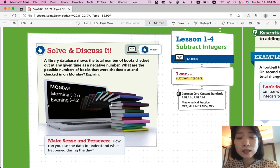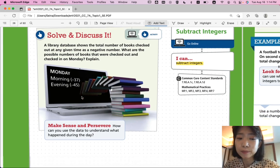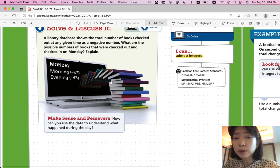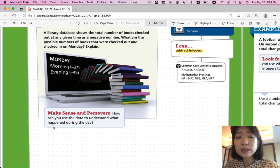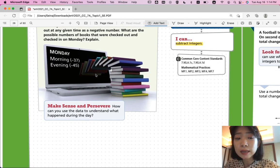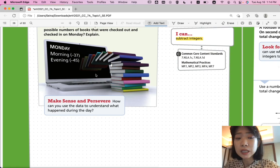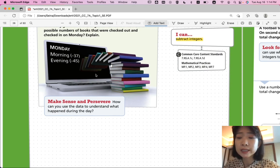So if you look at the library database here, in the morning, we start with negative 37 books that were checked out. In the evening, it says there were 45 books that were checked out. So since morning, how many more books were checked out? Eight more books were checked out. The distance between negative 37 and negative 45 is just 8. 45 minus 37 would be 8.